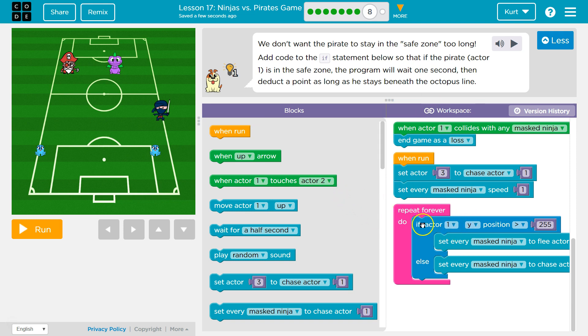Well, we want to see if the pirate stays below or greater than 255. We don't want if statement actor in the safe zone. Okay. So we want to know if the actor's in the safe zone for too long. Where's the safe zone?